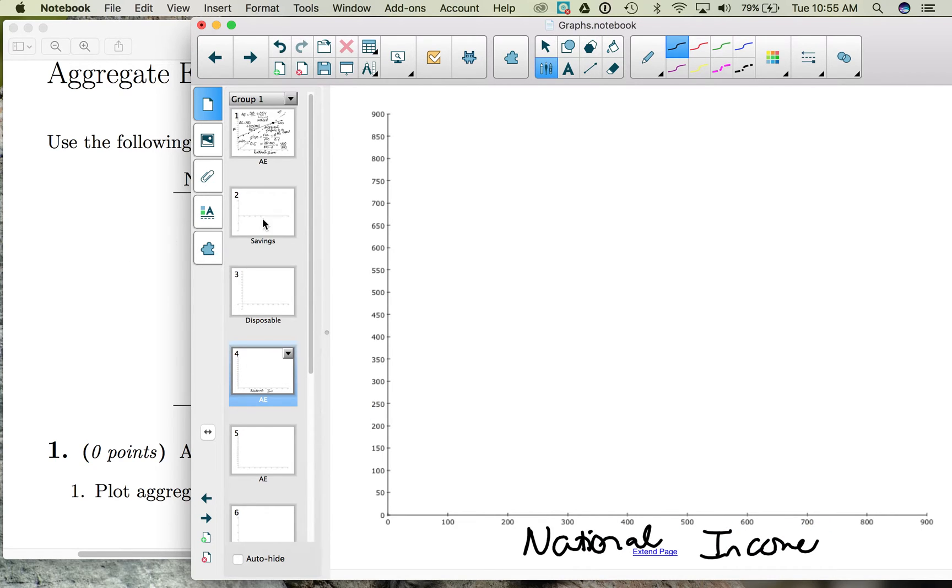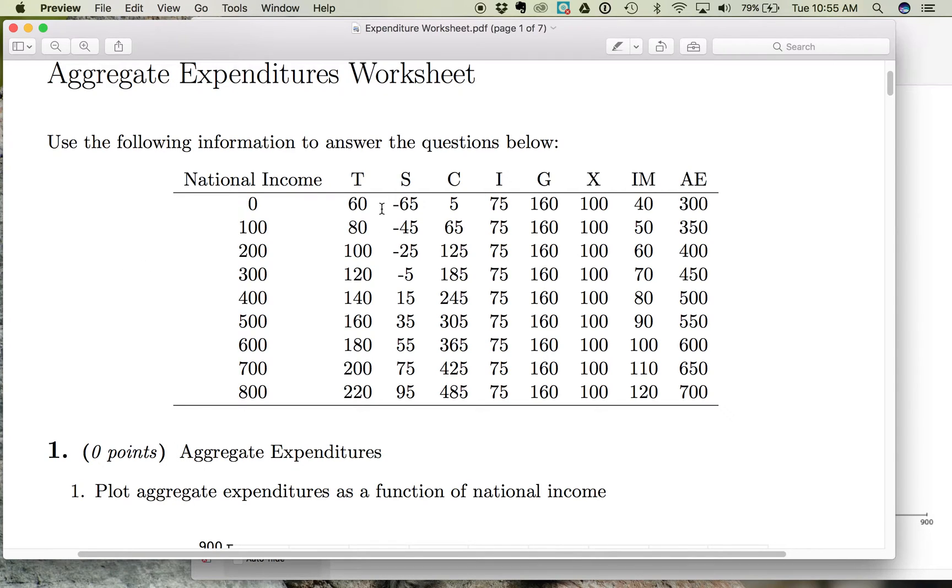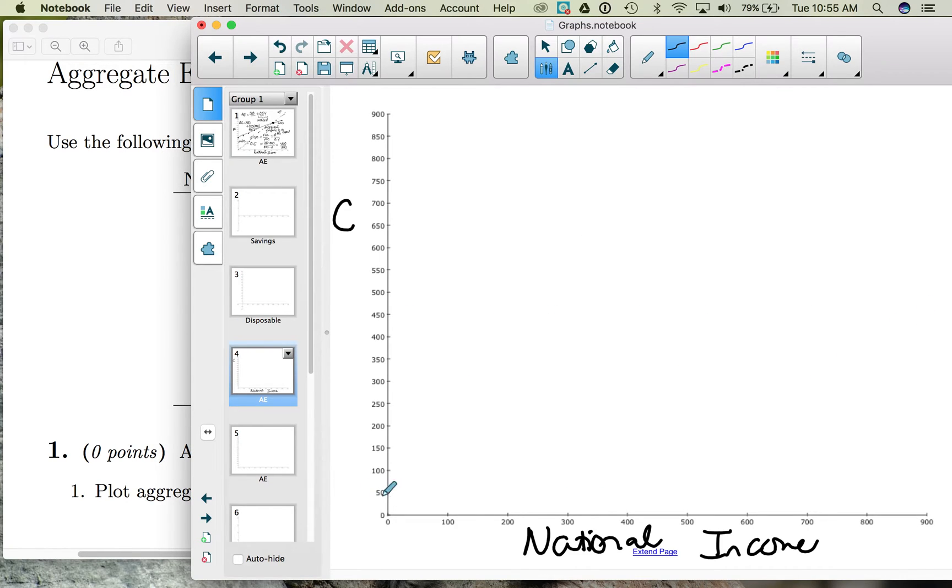And now we have consumption on the vertical. So when national income is zero, consumption spending is five. We would have a little tiny dot way down here at five.